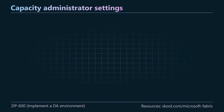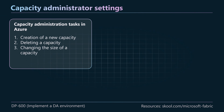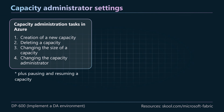Let's focus on the capacity administrator settings. There are two main places where capacity administration gets done. Number one is in Azure, because we need the Azure portal to purchase capacity — creating a new capacity, deleting existing capacities, changing the size, for example going from F2 to F4, and also changing the capacity administrator.